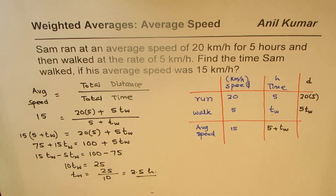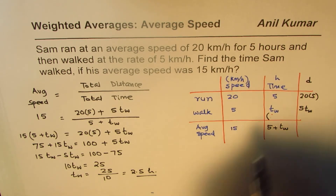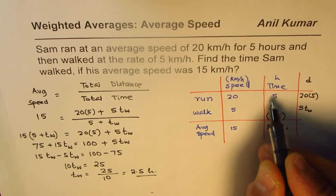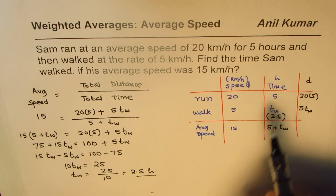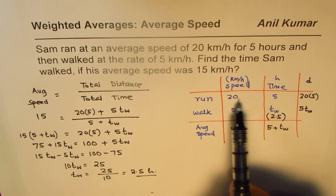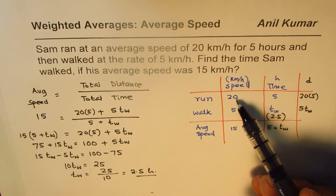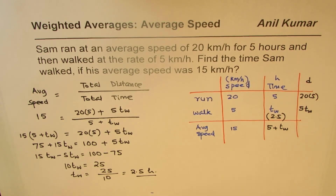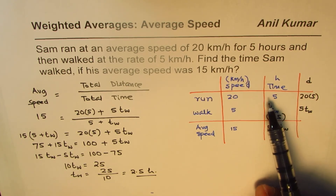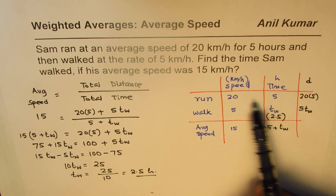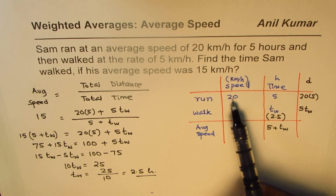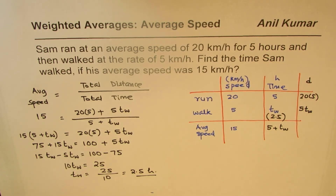Let us go back to our example and analyze what we found: the walking time is 2.5 hours, about half of the running time. You can see that since Sam ran much longer than he walked, his average speed is closer to his running speed. That is how the weight shifts in such cases — it is not just the mean value of the two speeds. I hope you appreciate that. I'm Manal Kumar. You can always subscribe and share my videos. Thank you and all the best.